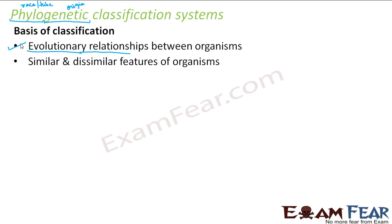Similar and dissimilar features of an organism play a very important role in this classification system. As per this system, organisms with more similar characters share a common ancestry. For example, you and your sibling look very similar because you share a common ancestor — the same parents. But when you compare yourself with your cousin, the similarities decrease because you are less closely related. The more the similarities, the more closely you are related and you share a common ancestor.